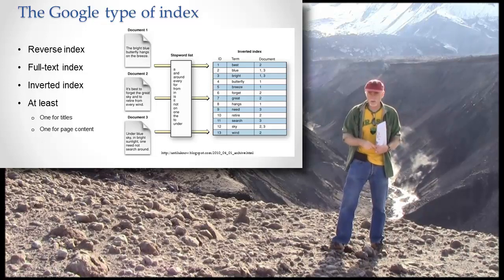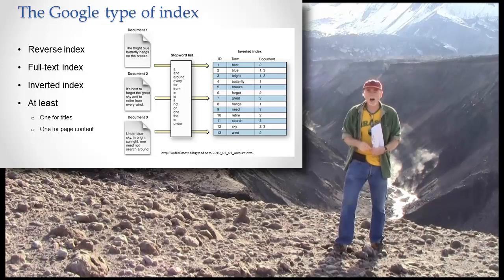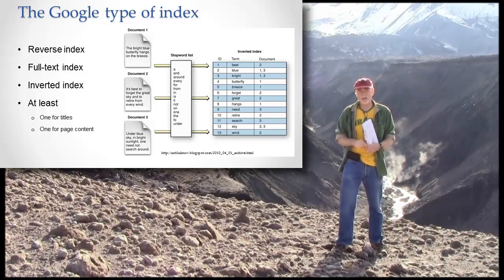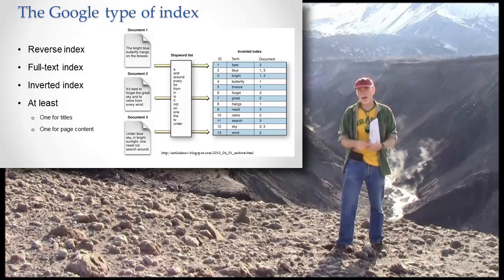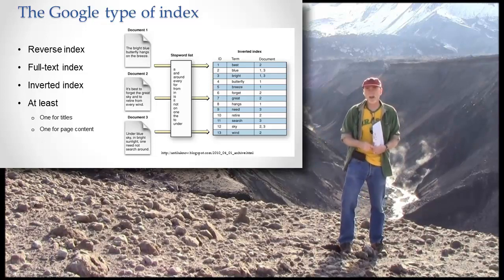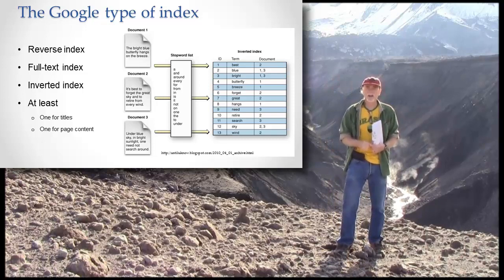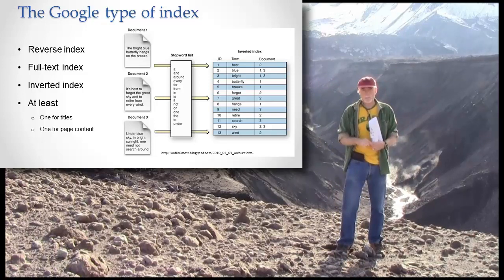Now you can imagine the word 'the' would come up on a ton of pages. Google actually deals with that because nobody's really going to search for the word 'the', so they exclude words like that. Those are called stop words - they stop them from being in the index in general.